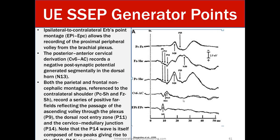The parietal contralateral referenced to FZ is a typical montage most practitioners use, because it provides a nice bipolar setup giving a clean cortical response while eliminating far-field responses. With FZ to shoulder, you lose the N20 because the active area is over the parietal lobe — you'd instead see a poor, isoelectric, or even inverted response plus a later frontal N30. This N30 is unlikely to appear on the CNIM exam, but it's useful context.